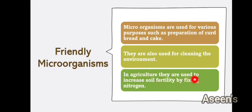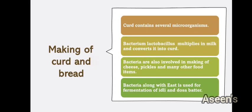In agriculture, microorganisms are used to increase soil fertility by fixing nitrogen. This is a topic we will cover in detail in Part Three of this chapter. Nitrogen is something plants need but cannot take directly from the atmosphere — they need it through the soil, and bacteria or microorganisms help make that possible.